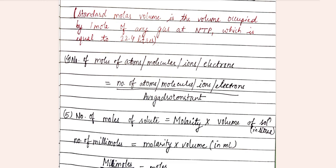Next, number of moles of atoms or molecules or ions or electrons can be calculated by dividing the number of atoms or molecules or ions or electrons by Avogadro's constant. Avogadro's constant is 6.022 × 10^23.